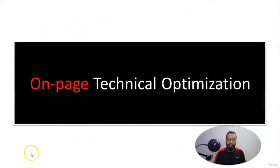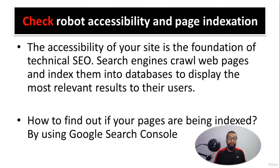In the previous video we discussed the 12 common key factors of on-page SEO. Now I will be discussing on-page technical optimization, which is done through checking the robots accessibility and page indexation.